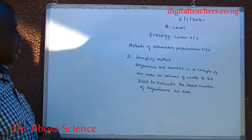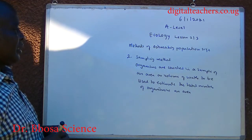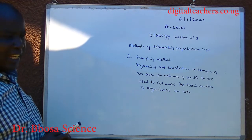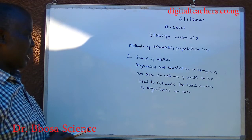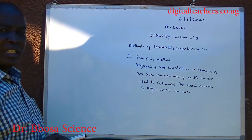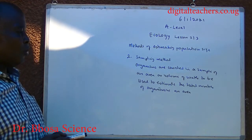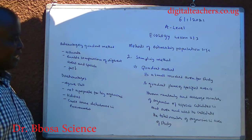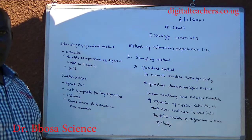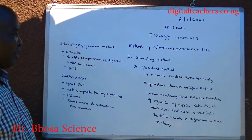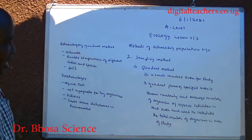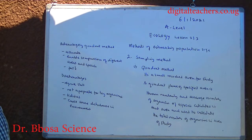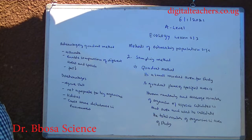Two: sampling method. Organisms are counted in a sample of an area or volume of water, and this is used to estimate the total number of organisms in an area. Roman one: quadrat method. It is a small marked area for study. A quadrat frame or specified area is thrown randomly and the average number of organisms of a species is calculated in that area. It is then used to calculate the total number of organisms in the area of study.